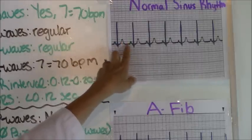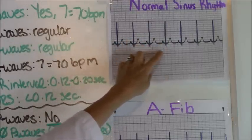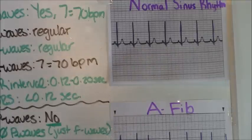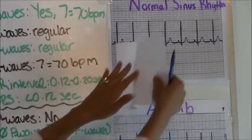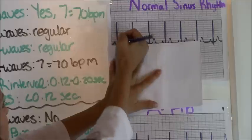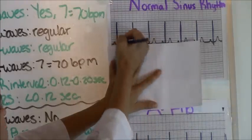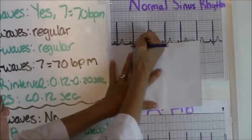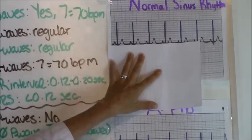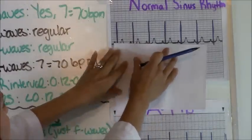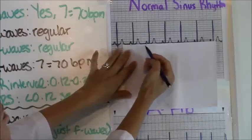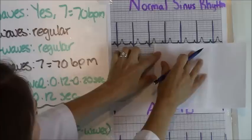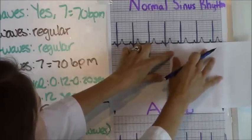Next, we're going to see if our P waves are regular — are they happening at exactly the same time? You can use calipers, but here I'm going to use a piece of paper. You mark where the P wave began and where the next P wave started, then compare the others. Moving our piece of paper along, they're presenting exactly where marked. So our P waves are definitely regular.